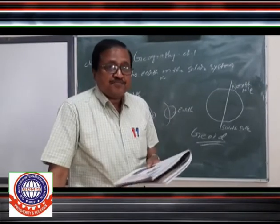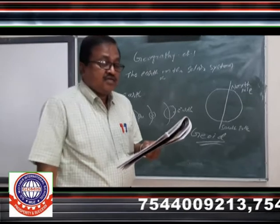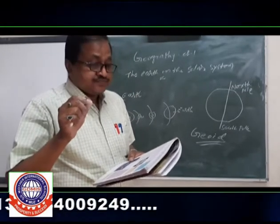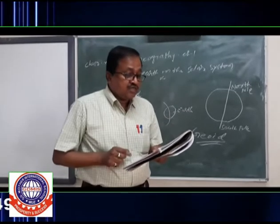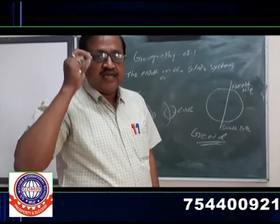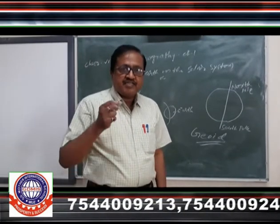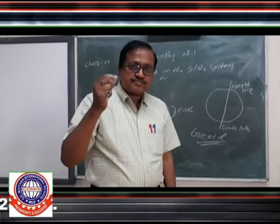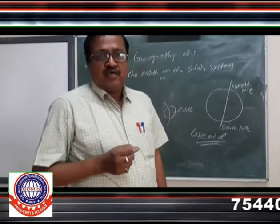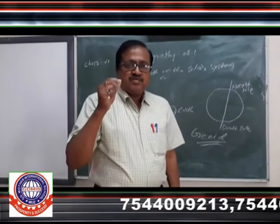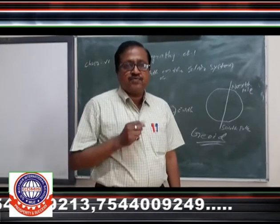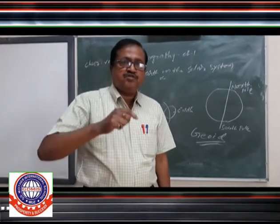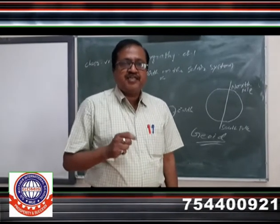From outer space, if you see the Earth it appears blue in color. This is only because two-thirds of the Earth's surface is covered by water. That is why people say it is a blue planet. About 71% — roughly 75% — of the Earth's surface is covered by water, and it looks blue from space. That is why it is called the blue planet.